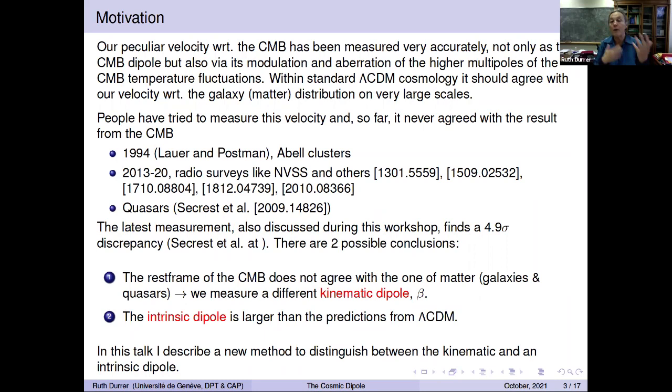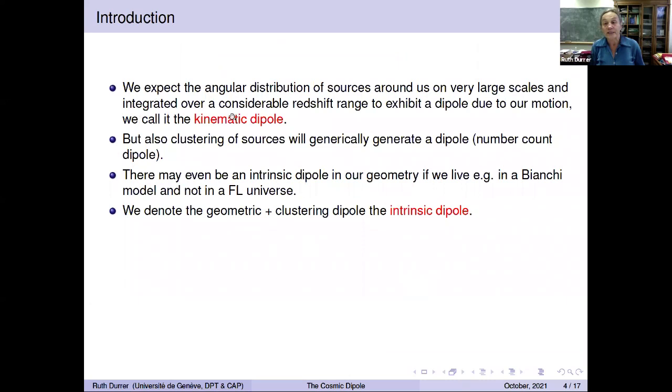Apart from that all these people have made mistakes, which is not impossible, there are two possible conclusions as I can see it. One is that the rest frame of the CMB does not agree with the rest frame of matter, that there are two different rest frames in the universe. So our universe is not homogeneous and isotropic, and therefore we would measure a different kinematic dipole. Another possibility, however, is also that the intrinsic dipole is larger than the predictions from lambda CDM, intrinsic dipole from clustering or an anisotropy of spacetime.